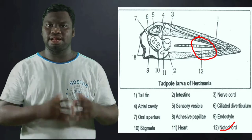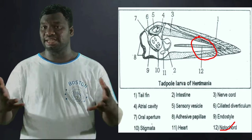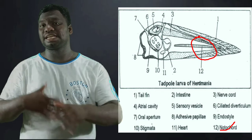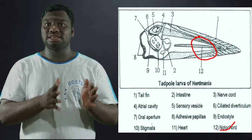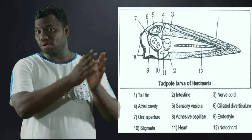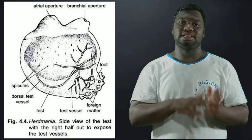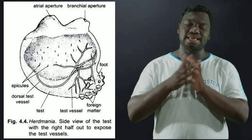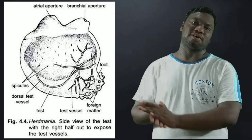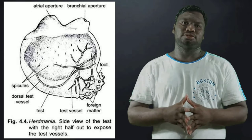In the larval stage, you can see the notochord is present. In the adult stage, the notochord is absent. The notochord is a rod-like structure — it provides support to the body of the organism, helps in movement, and provides space for muscles to facilitate movement.